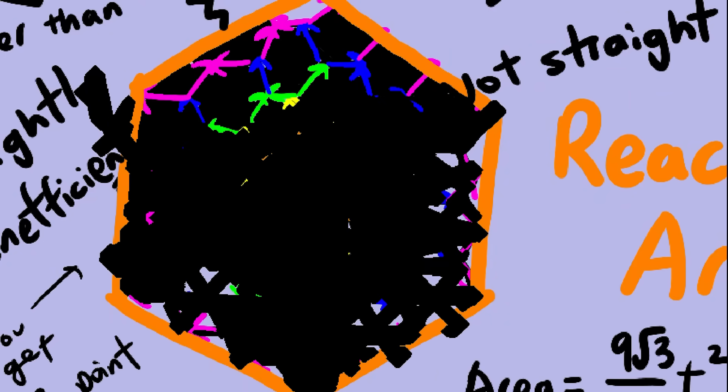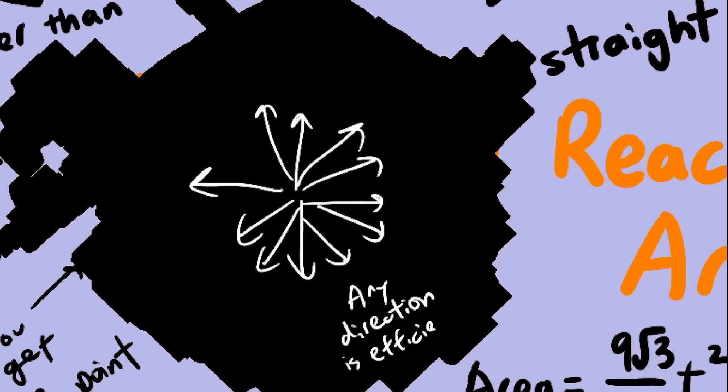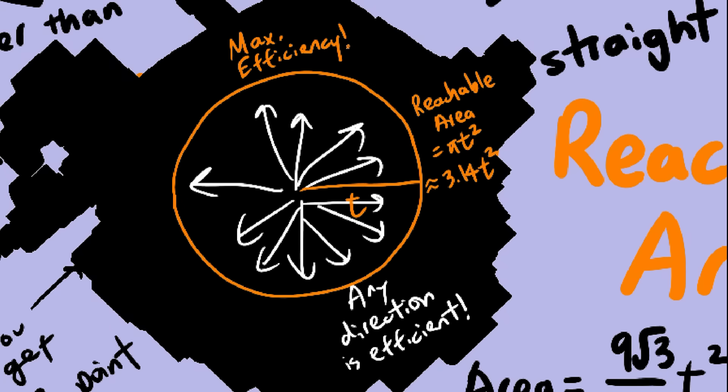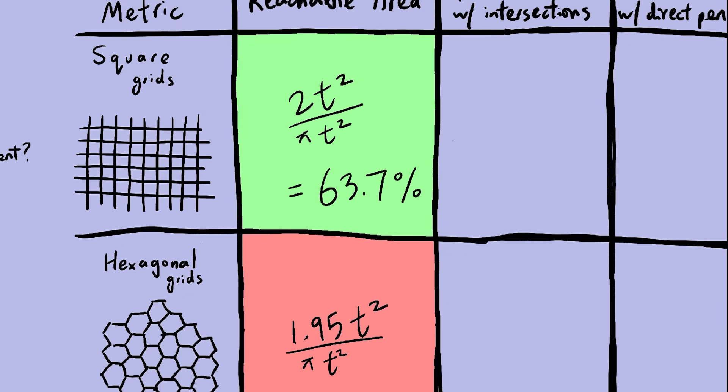In fact, why don't we make the entire surface a huge road? Why have buildings when you can have the most efficient transportation system possible? The reachable area becomes a perfect circle, bigger than the reachable area of any other grid. We have now achieved 100% efficiency. The reachable area of all the other grids is only a fraction of this circle's area.